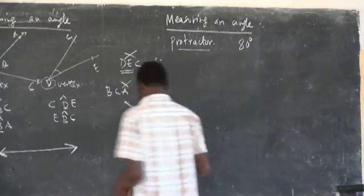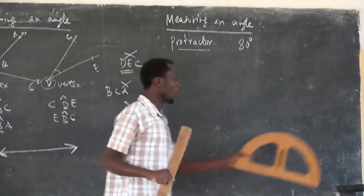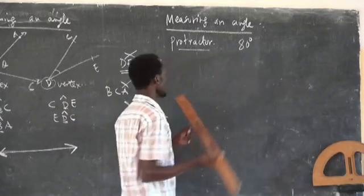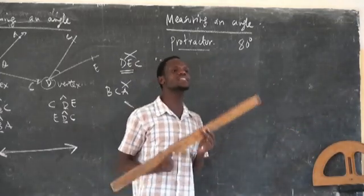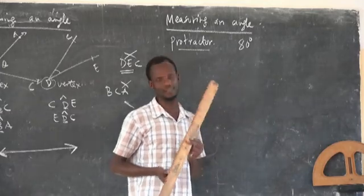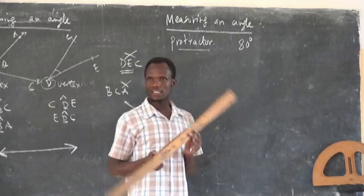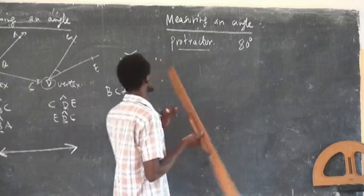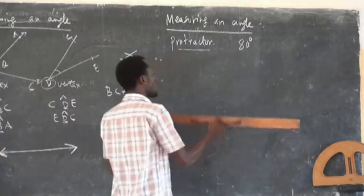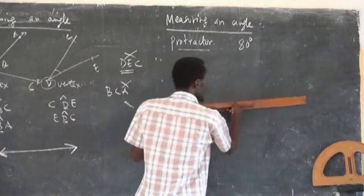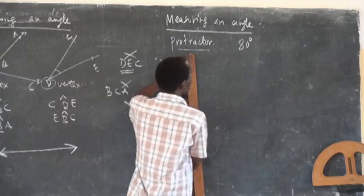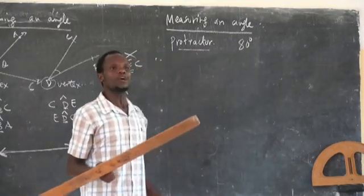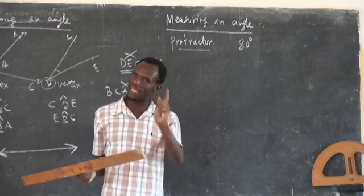Very simple. First of all, you draw your line — a straight line. Make sure that it is a straight line. Now, this is my line. No matter whether you draw it this way, or this way, or this way — that is not a problem. What we need is a straight line.